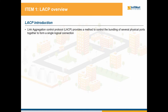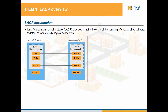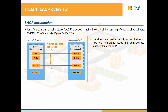Link aggregation control protocol or LACP provides a method to control the bundling of several physical ports together to form a single logical connection. In the picture, two network devices that have LACP capabilities are represented. Ports 1 to N are considered to be part of a link aggregation group having LACP enabled. The devices will exchange LACP control frames through all those links in order to detect the multiple links between them and combine them into a single logical link. The devices need to be directly connected using links with the same speed, and both devices should implement LACP in order to achieve automatic link aggregation.